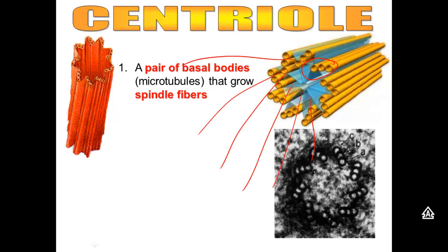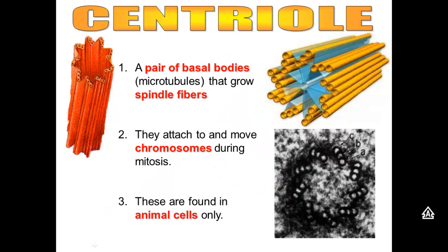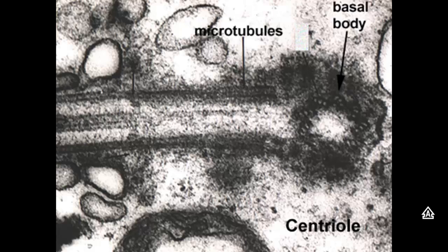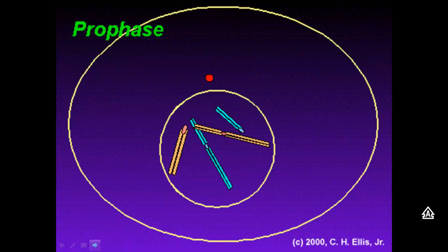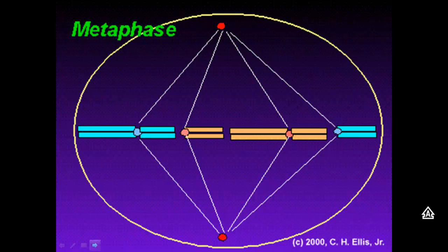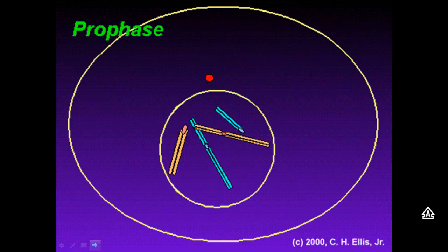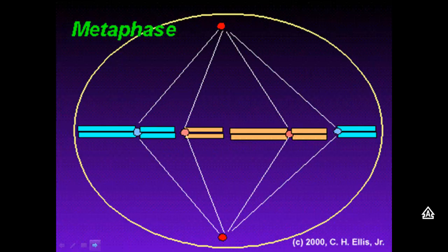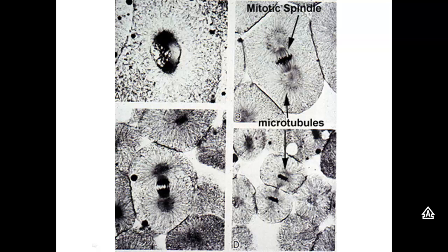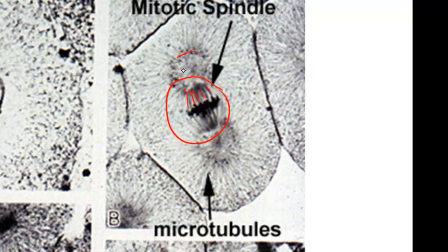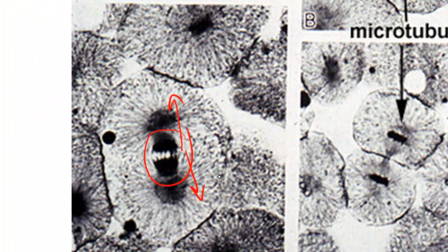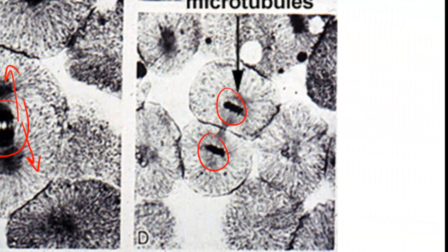During cell replication, the centriole attaches through its spindle fibers to chromosomes to pull them apart. We only find centrioles in animal cells, not in plants. Here's an electron micrograph picture of a centriole. Here the centrioles are making spindle fibers, and the spindle fibers rip the chromosomes apart, resulting in two identical daughter cells. You can see the dark chromosomes being pulled apart by those spindle fibers, with the centrioles on either end.